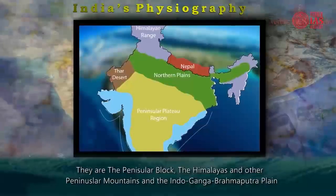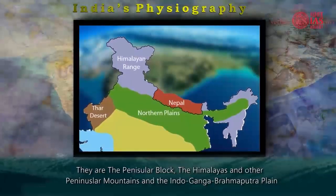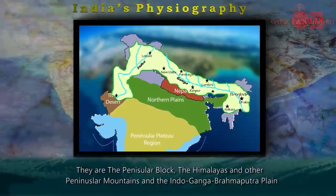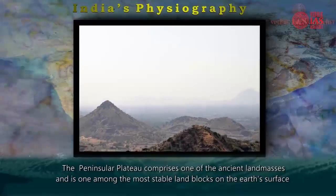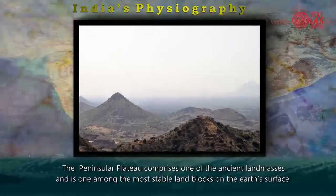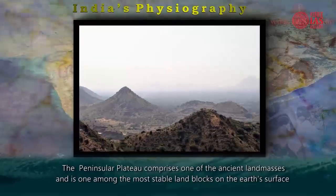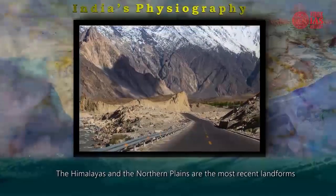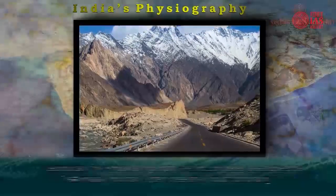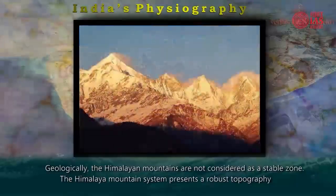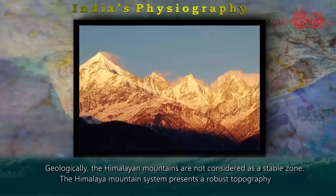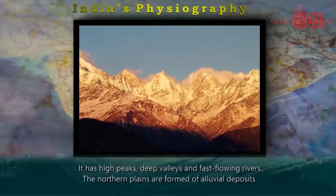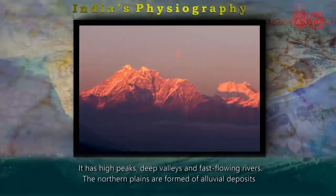The three geological divisions are the Peninsular Block, the Himalayas and other Peninsular Mountains, and the Indo-Ganga-Brahmaputra Plain. The Peninsular Plateau comprises one of the ancient landmasses and is one of the most stable land blocks on the earth's surface. The Himalayas and the Northern Plains are the most recent landforms. Geologically, the Himalayan mountains are not considered a stable zone. The Himalayan mountain system presents a robust topography with high peaks, deep valleys, and fast-flowing rivers.